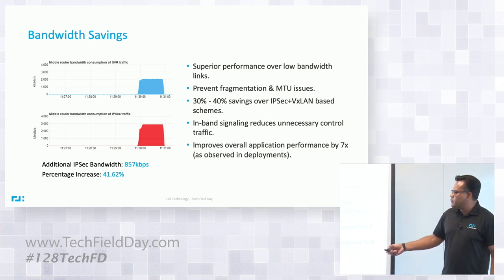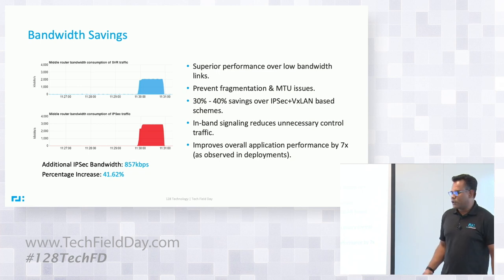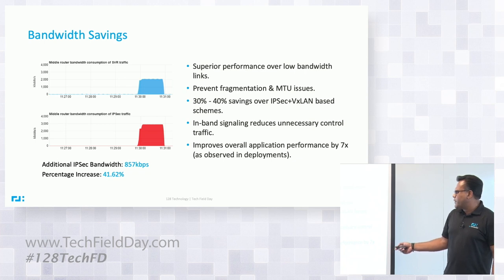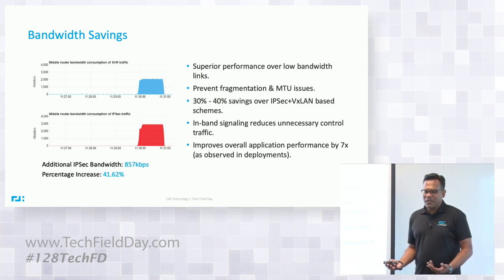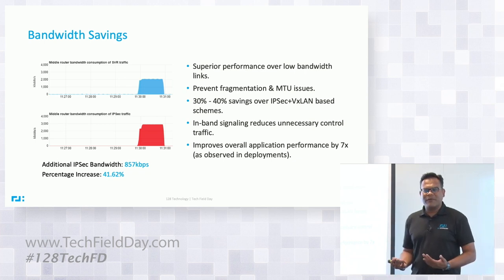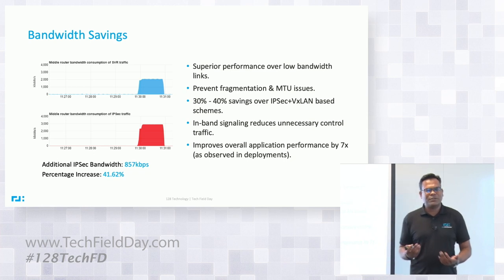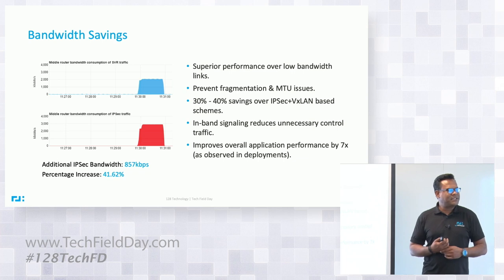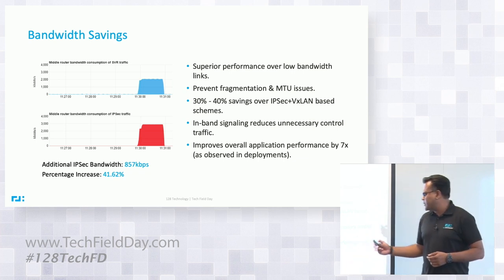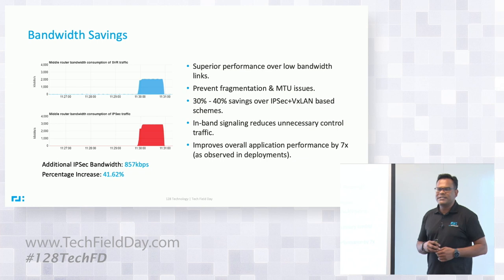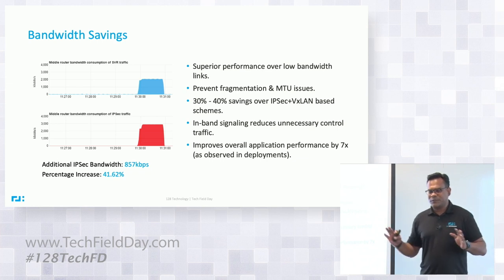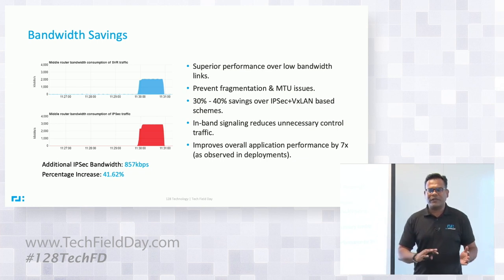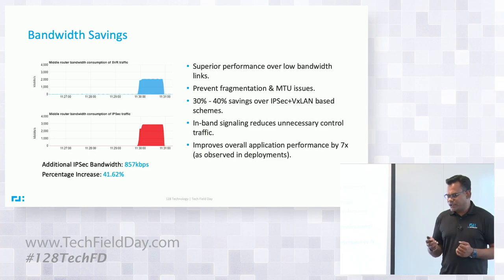For inbound signaling, we're using the metadata. You've already heard about how we use the first packet processing and the metadata in the first packet — that reduces a lot of control traffic. In some cases — this is actually from a customer deployment we have for oil and gas — they said they're seeing a 7x improvement just by switching over from tunnel-based to tunnel-free, because of the improvement in congestion.